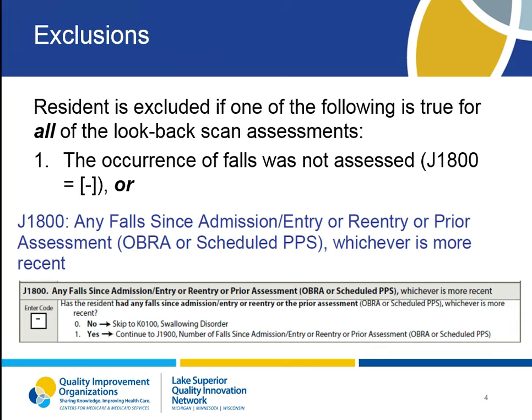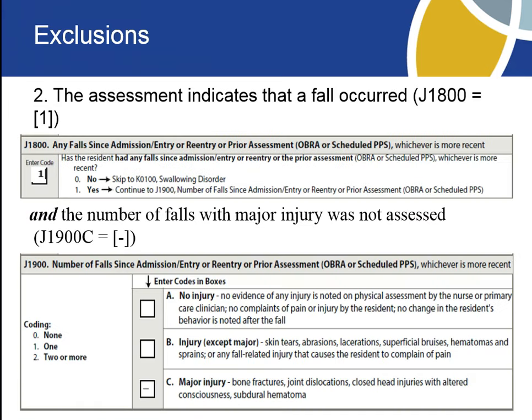There are two exclusions included in the denominator of this quality measure. The first exclusion is that the occurrence of falls was not assessed on all of the look-back scan assessments, so there would be a dash on J1800 for all look-back assessments. The second exclusion is that the assessment indicates that a fall occurred, score of 1 on J1800, and the number of falls with major injury was not assessed, dash on J1900C.